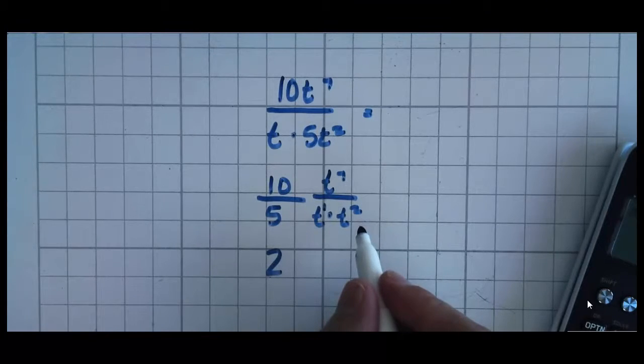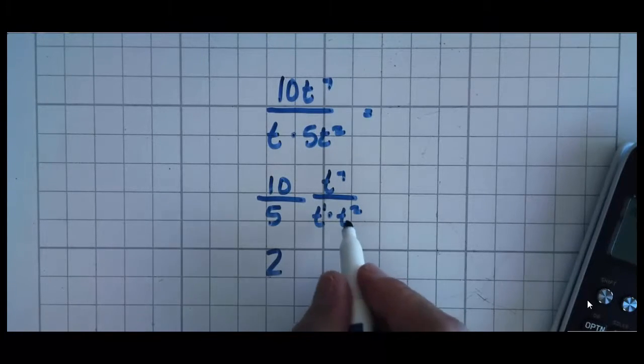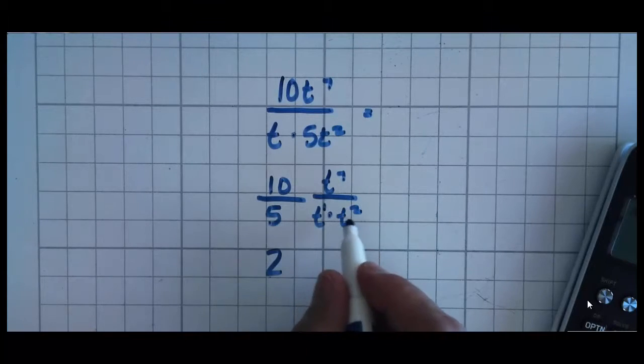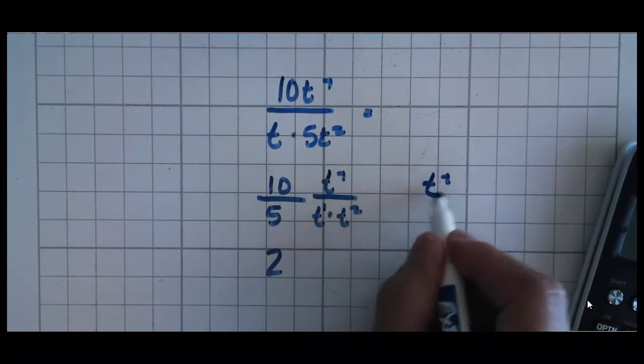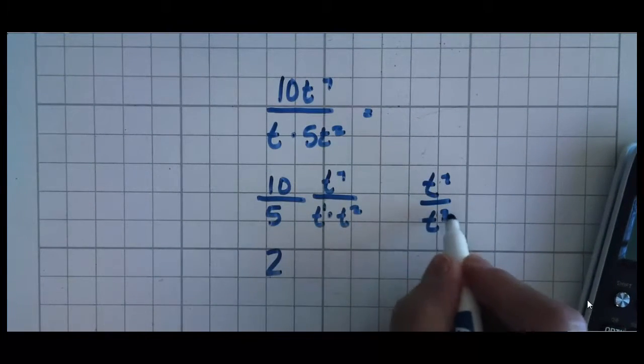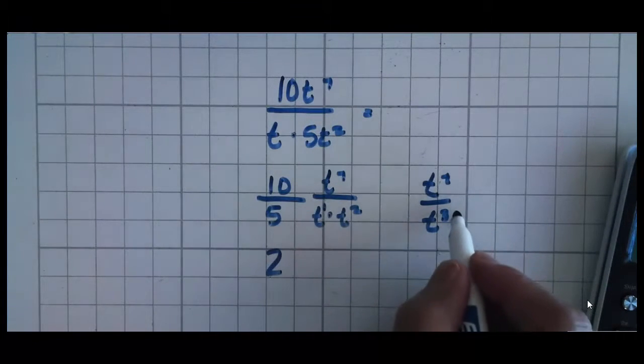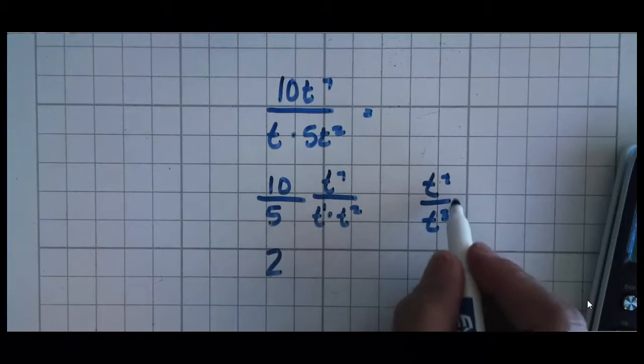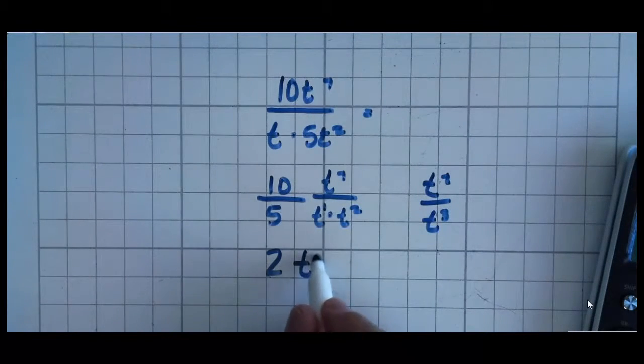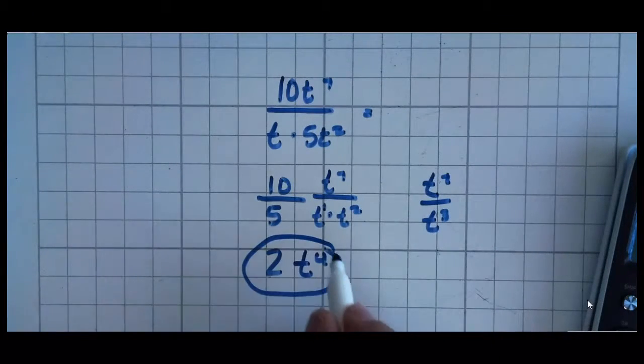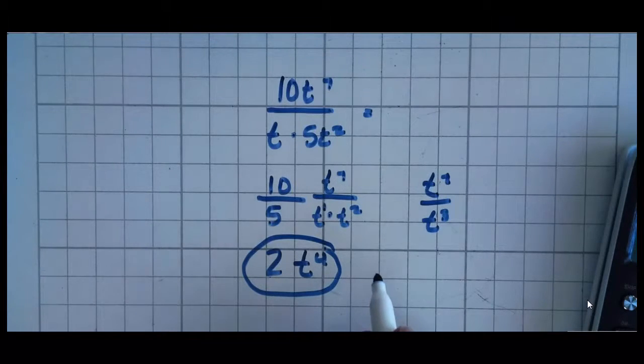Now you might be thinking, I thought I was supposed to multiply them together. That's only when you raise a power to a power. So only when you have parentheses. So 7t's in the numerator, 3t's in the denominator. And remember, when you do this, it's the exponent on the top minus the exponent on the bottom. 7 minus 3, t to the 4th.